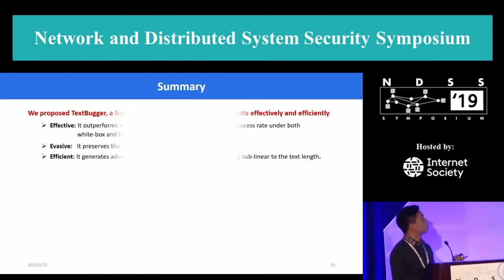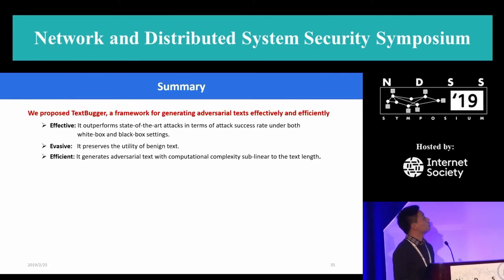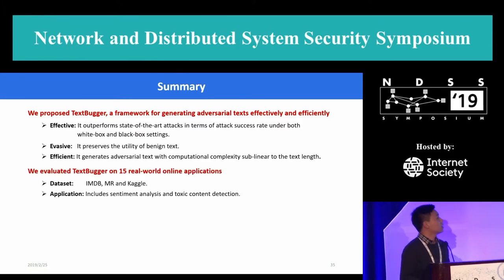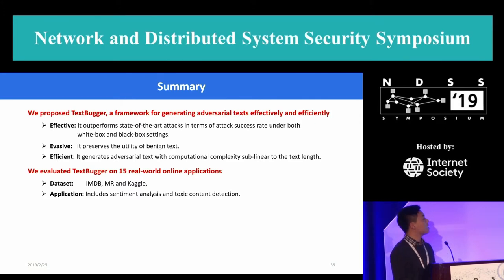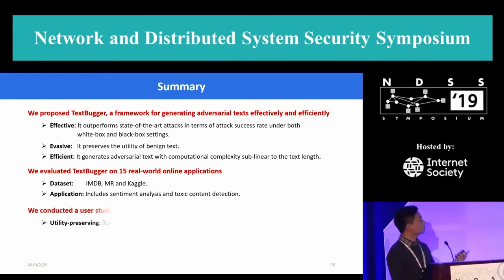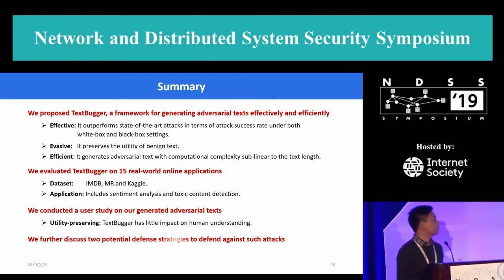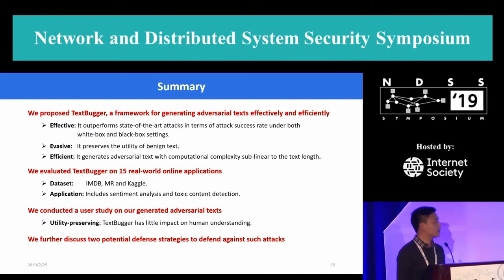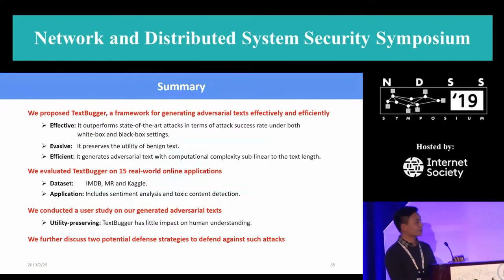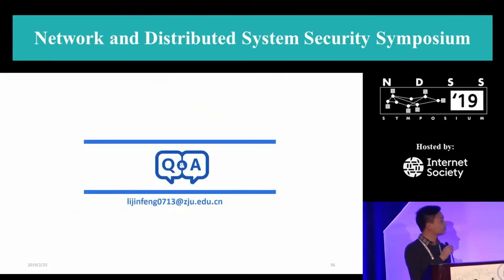In conclusion, in this work we made the following contributions. First, we proposed TextBugger for generating adversarial text effectively and efficiently. We evaluated TextBugger on 15 real-world online platforms on three datasets and two applications. We conducted a user study on our generated adversarial text. And we further discussed two potential defense strategies to defend against such attacks. Thank you for your patience.